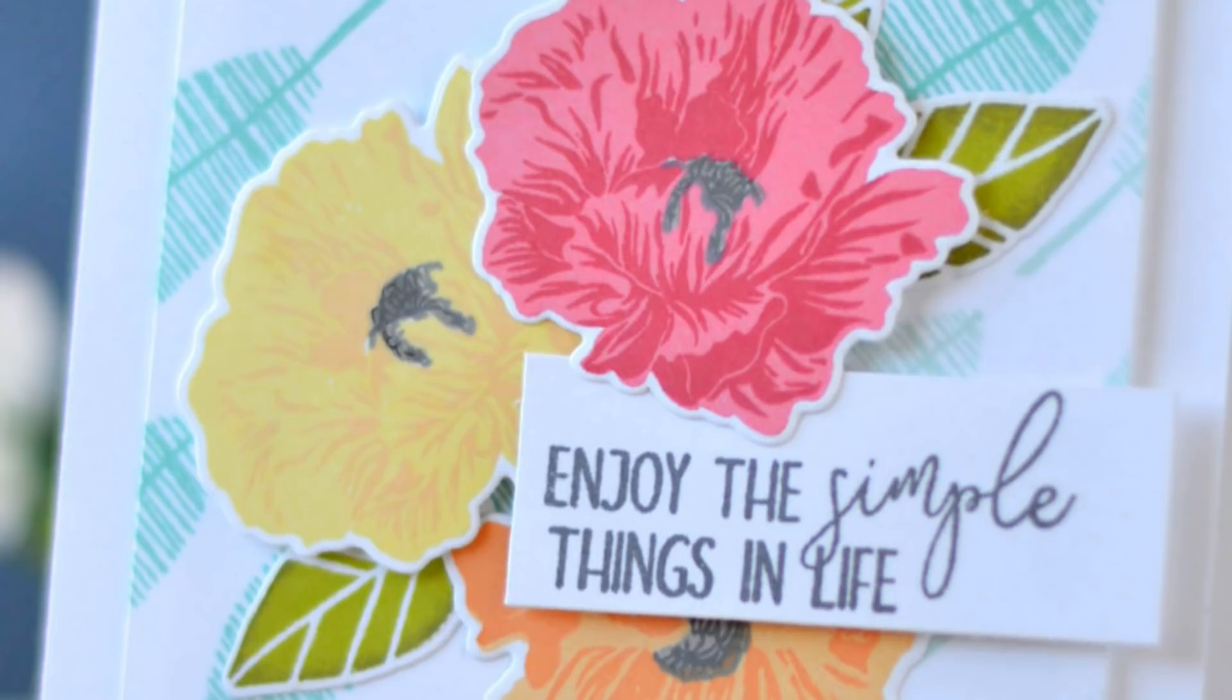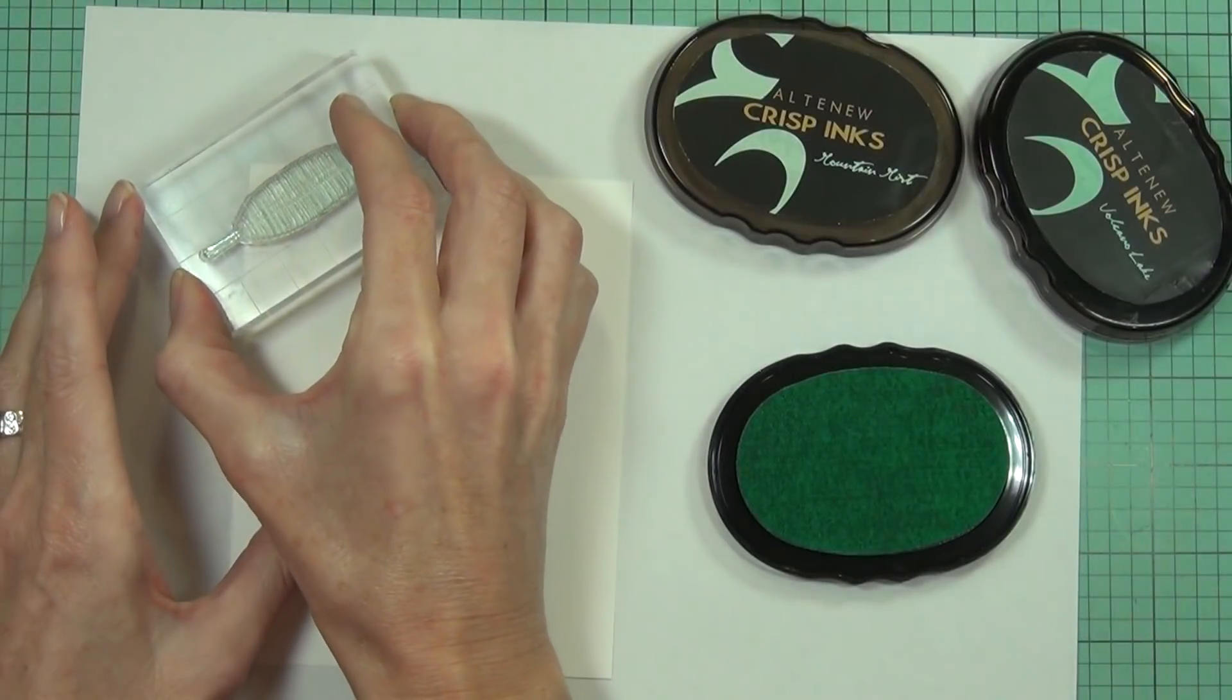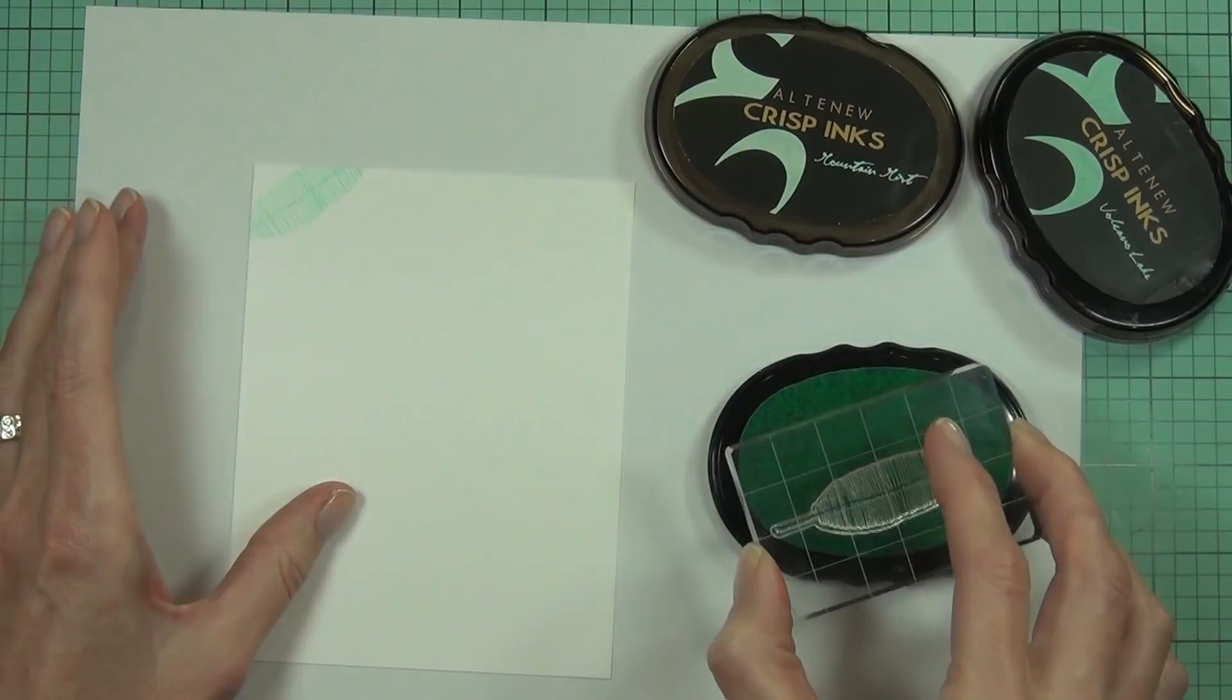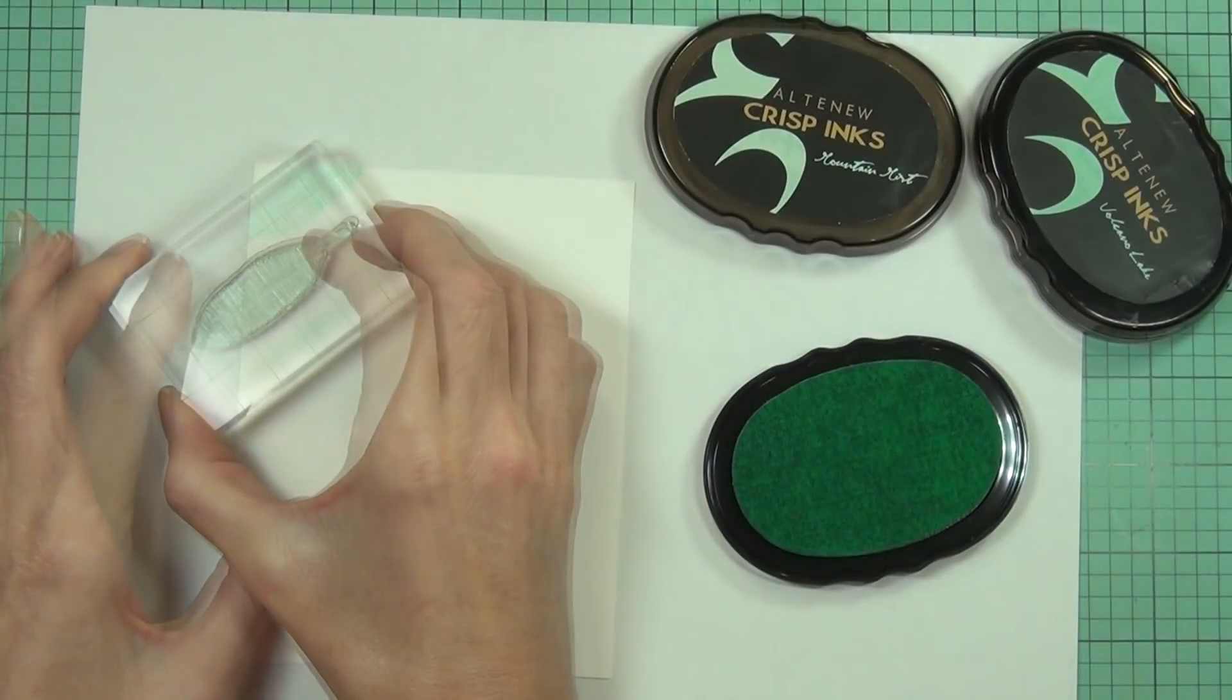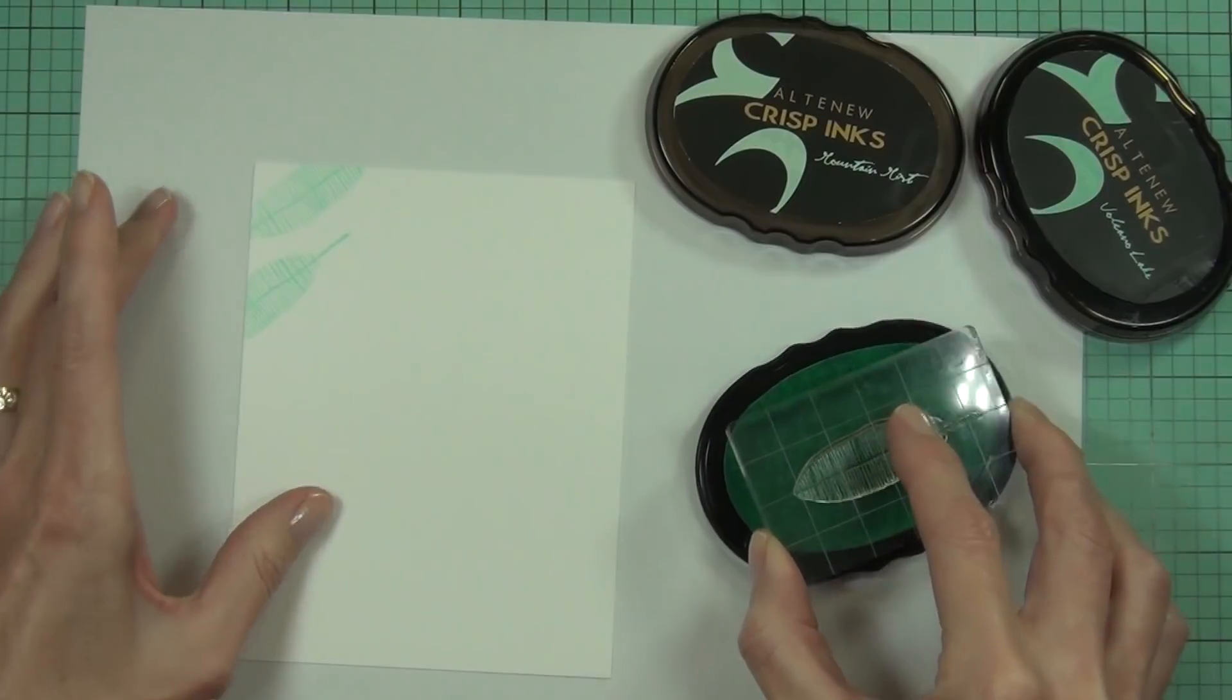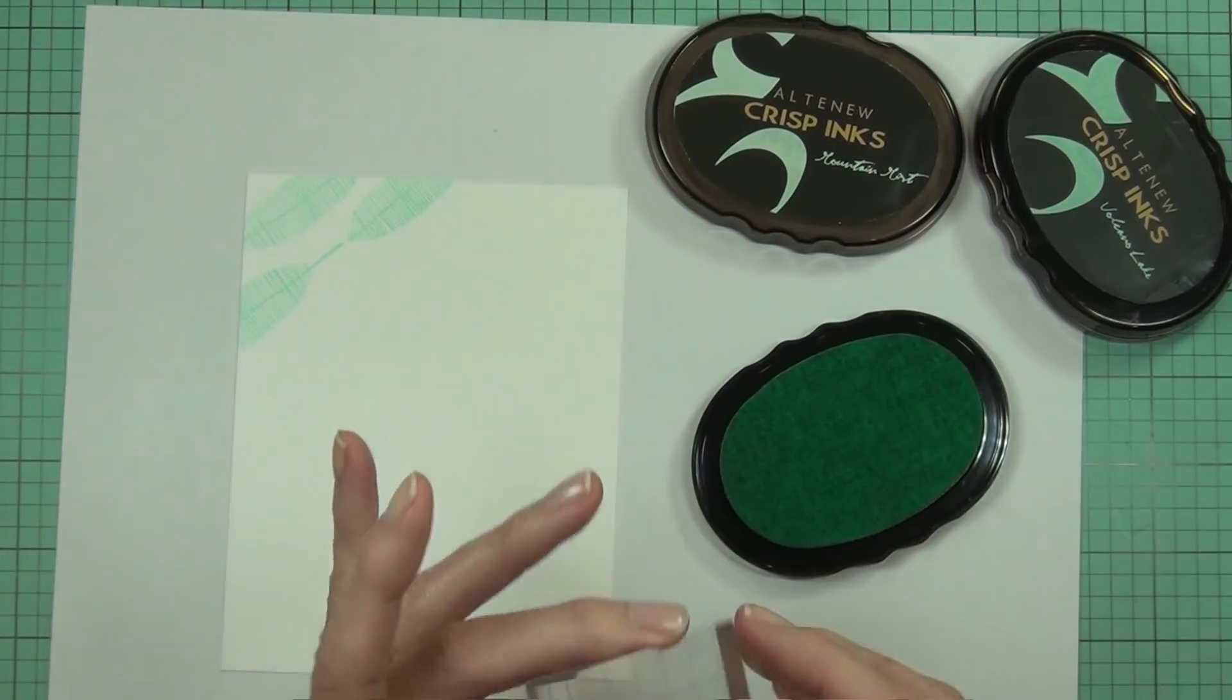Hi, it's Therese from Lost in Paper and I'm really excited because today I'm at the Allen Hudson classroom sharing this card that I'm making for the Mix It Up challenge. That means I get to share some products from both the Essentials by Ellen product line and combine it with the Altenew stamps and inks as well today. So much fun!